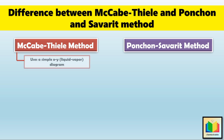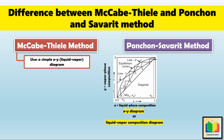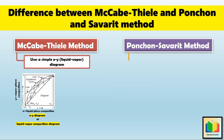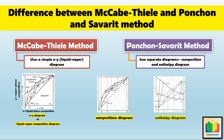The McCabe-Thiele method uses a simple x-y diagram, also called the liquid-vapor diagram, where the x-axis represents the liquid composition and the y-axis represents the vapor composition. In contrast, the Ponchon-Savarit method uses two separate diagrams: a composition diagram, similar to the McCabe-Thiele x-y diagram, and an enthalpy diagram that accounts for the energy balances of the system. This enthalpy diagram helps calculate heat duties and provides a more detailed study of thermodynamic behavior.